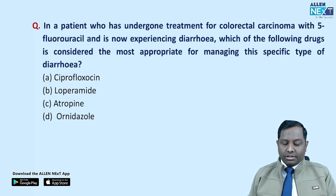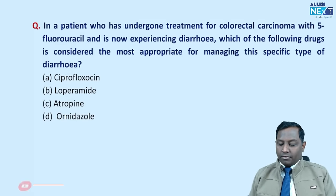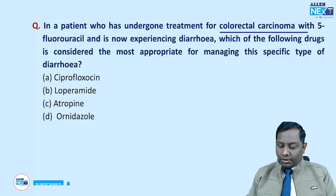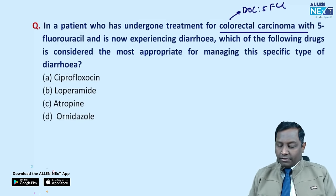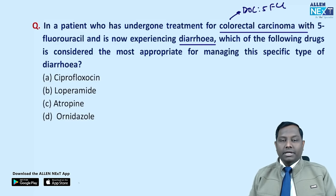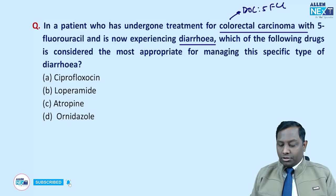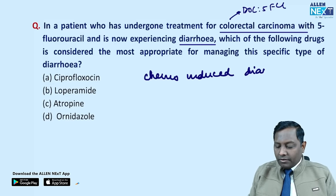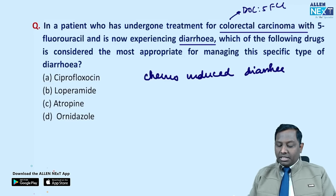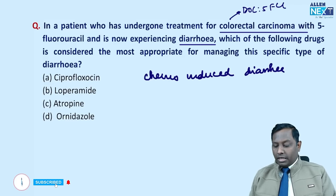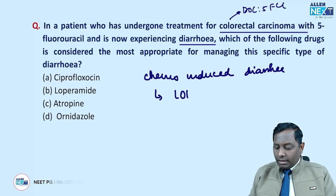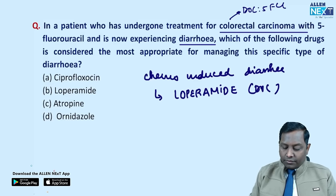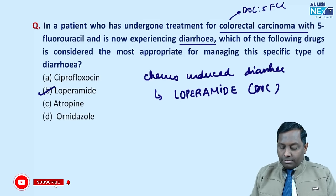The first question was about a patient under treatment for colorectal carcinoma. The drug of choice for colorectal carcinoma is 5-fluorouracil. He is experiencing diarrhea, nausea, and vomiting. The question asks: in chemo-induced diarrhea, which is the most appropriate drug? The opioid loperamide is the drug of choice for chemo-induced diarrhea. The correct answer is B.